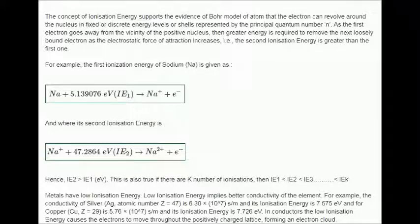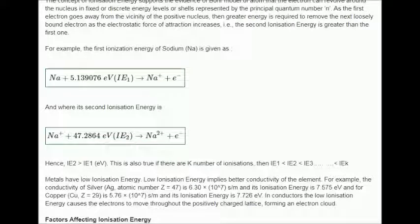Metals have low ionization energy. Low ionization energy implies better conductivity of the element. For example, the conductivity of silver (Ag, atomic number z equals 47) is 6.30 times 10 to the power of 7 s per meter and its ionization energy is 7.575 electron volts.